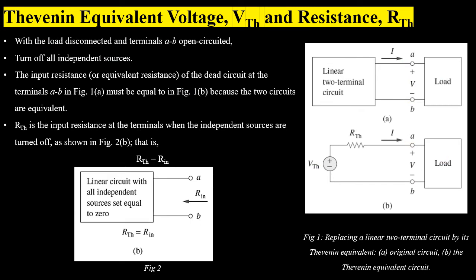To find RTH, we again remove the load from both circuits and turn off all independent sources. The input or equivalent resistance at terminals A to B in figure 1A must equal that in figure 1B since the two circuits are equivalent. In figure 1B, the voltage source is turned off and replaced by a short circuit, and the load is disconnected, so at terminals A to B we have a resistance of RTH acting as the input resistance. Therefore the input resistance in figure 1A must equal RTH.